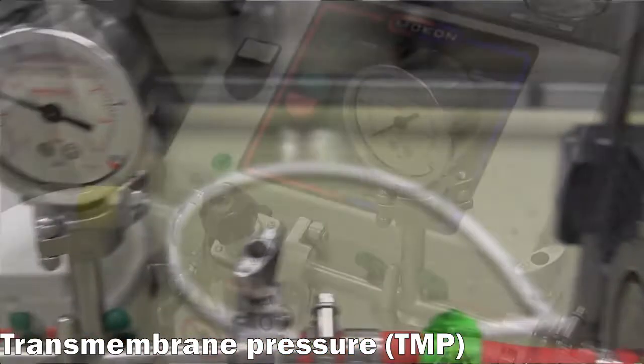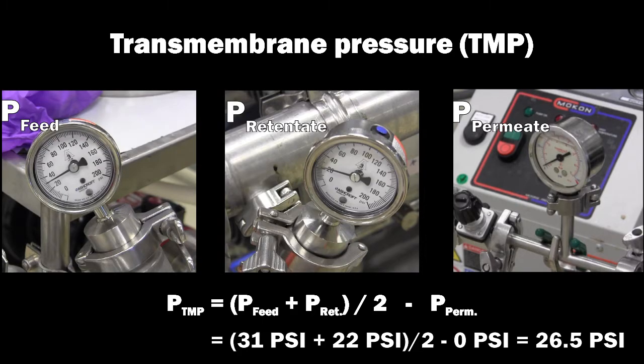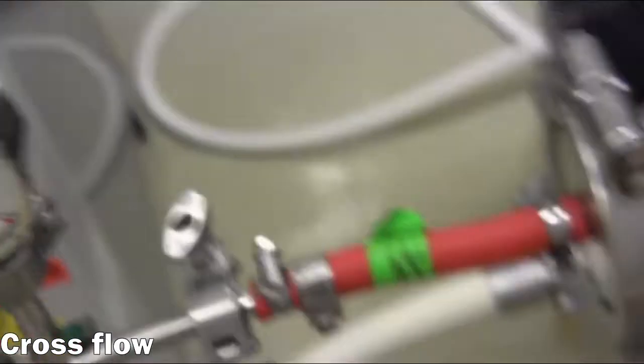In this example, the permeate outlet is measured at 0 psi gauge, which along with the other pressure readings, results in a transmembrane pressure of 26.5 psi gauge. Lastly, the cross flow is about 20 liters per minute.